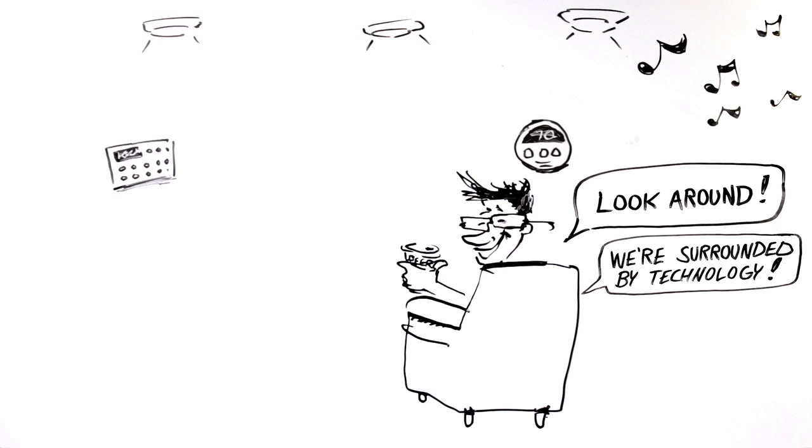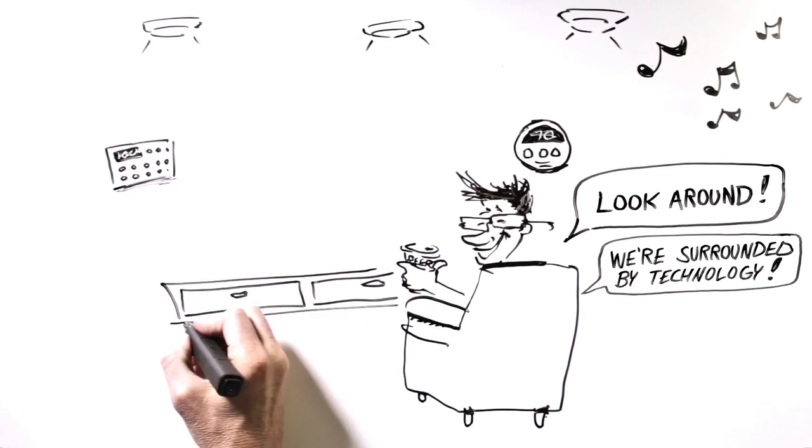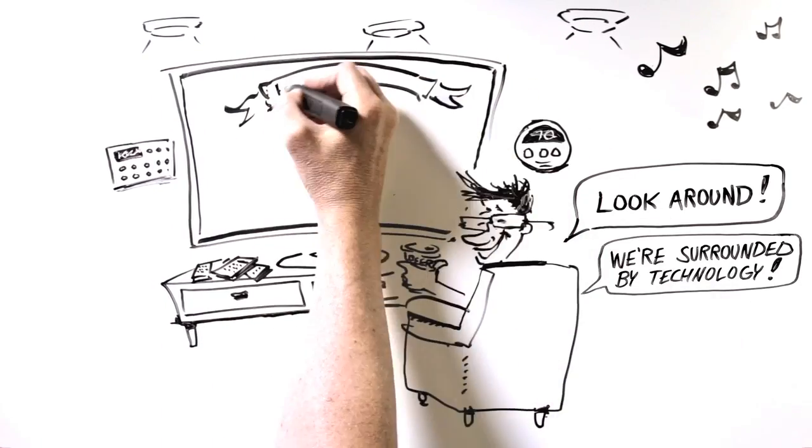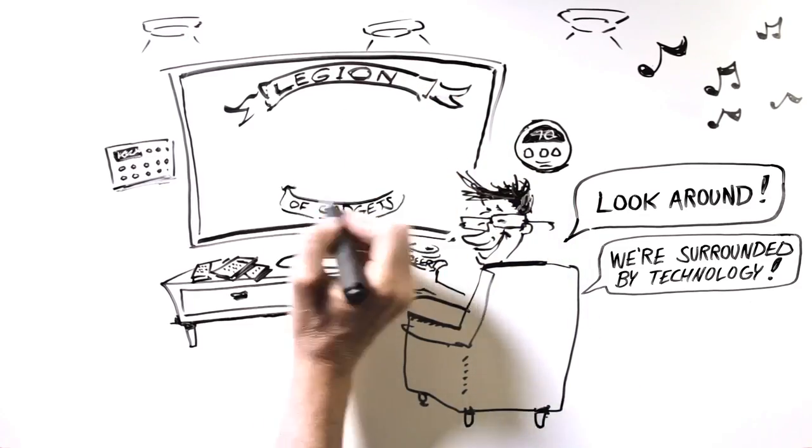We have music, televisions, thermostats, and lights. We may also have motorized shades, pool equipment, security systems, surveillance cameras, and a lot more.